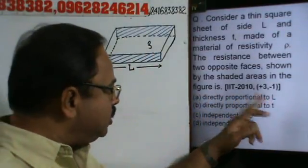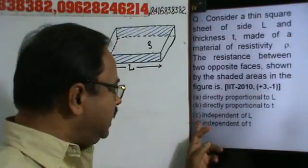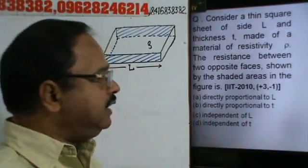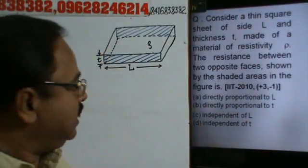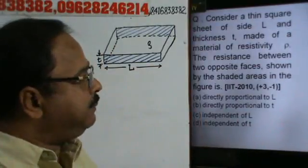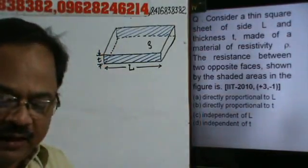Now, the options are: directly proportional to L, directly proportional to T, independent of L, and independent of T. So, these are the options. Now, let's look at what we need.